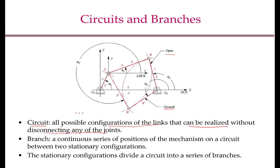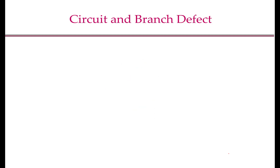So B and B prime are on two different circuits. In general, if the given poses are on two different circuits of the mechanism, then you cannot reach all three configurations with continuous motion. A branch, on the other hand, is a continuous series of positions of the mechanism on a circuit between two stationary configurations. A stationary configuration is one where the coupler and the output link are collinear. The stationary configuration divides a circuit into a series of branches.